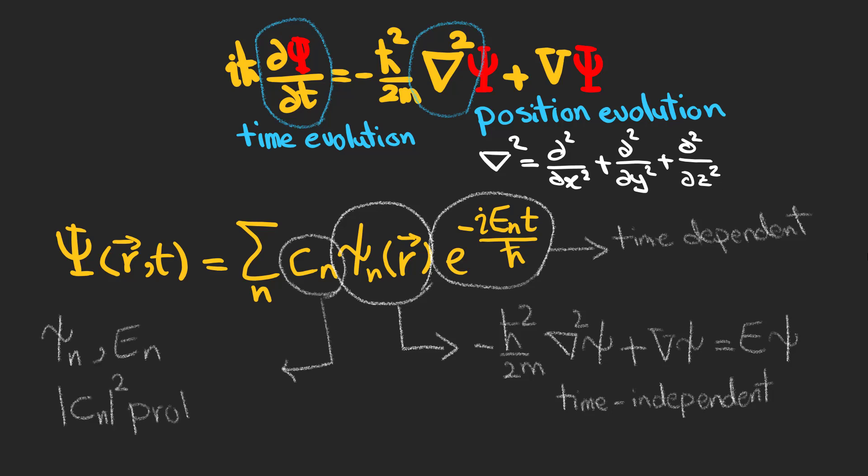And last but not the least, a coefficient which corresponds to each energy and the state we talked about earlier. Each C_n is a kind of probability amplitude and is complex valued. And if we multiply it by its conjugate, it shows the probability of the particle to be in a certain energy and state.